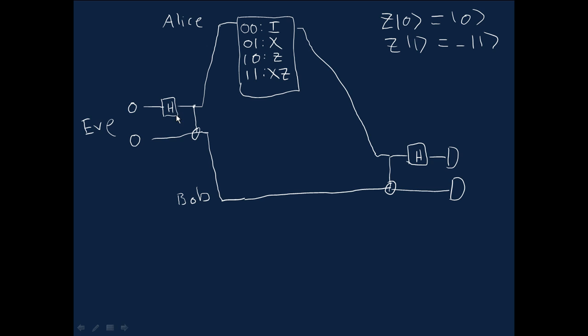So we start out with the 0, 0 state. We apply, Eve applies the Hadamard gate. So the 0 gets taken to the superposition of 0 and 1, and the other 0 doesn't change. So we end up with 0, 0 plus 1, 0 all over root 2. But I'm going to omit all the root 2s because they just get in the way, frankly. And I'm also going to continue to omit the ket notation. So this is really the state 0, 0 plus 1, 0 over root 2.